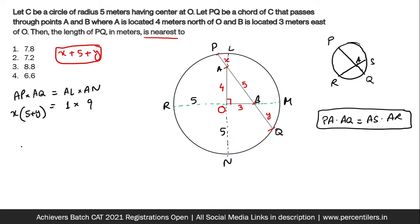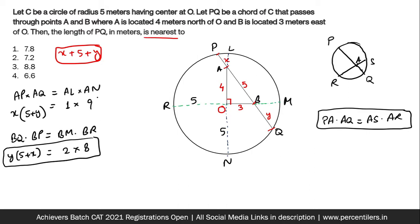Similarly, for the other pair of chords PQ and RM, we write BQ × BP = BM × BR. BM × BR = 2 × 8, and BQ × BP = y × (5 + x). From these two equations with two variables x and y, we solve. The equations are in multiplication form with addition terms in brackets, leading to a quadratic equation.